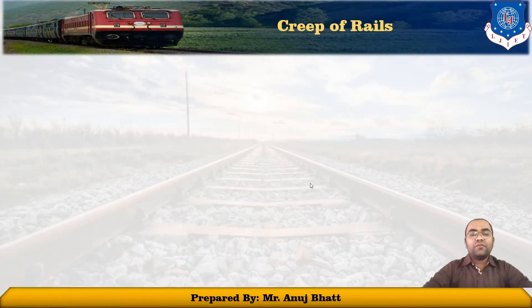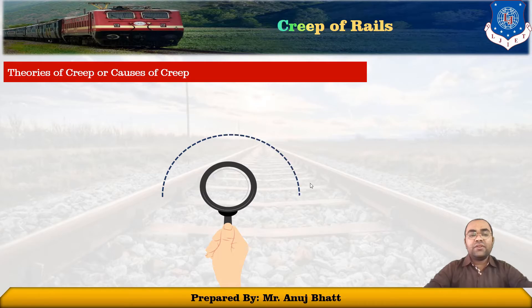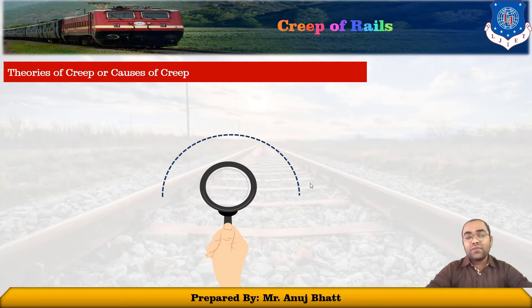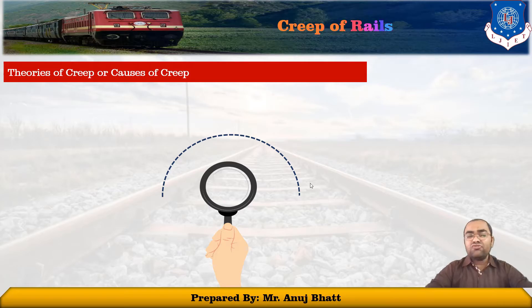Now let us discuss the theoretical parts — the different causes for which creep occurs. There are various theories propounded to explain this defect, and different causes of creep. However, none of them gives the true picture of the real cause of creep in the rails.